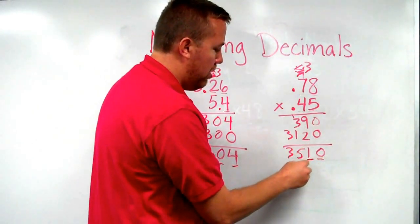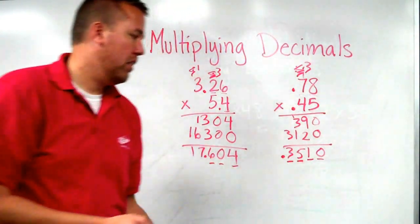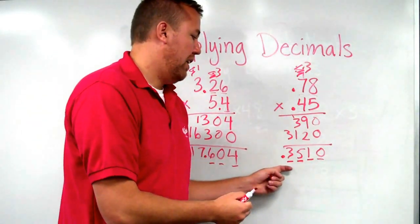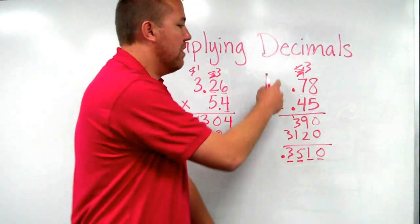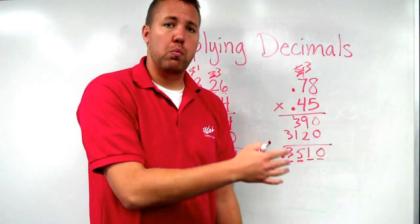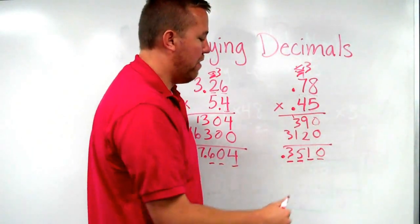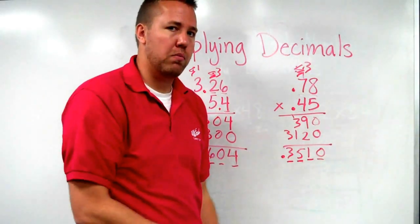So one, two, three, four digits after the decimal in the answer. And that, seventy-eight hundredths times forty-five hundredths is 3510 ten thousandths. Because neither of these numbers are bigger than one, that number is going to get smaller. So seventy-eight hundredths times forty-five hundredths equals approximately thirty-five hundredths, because we are getting smaller.